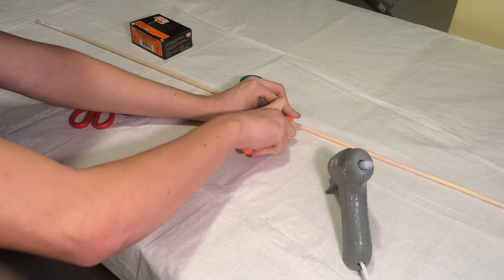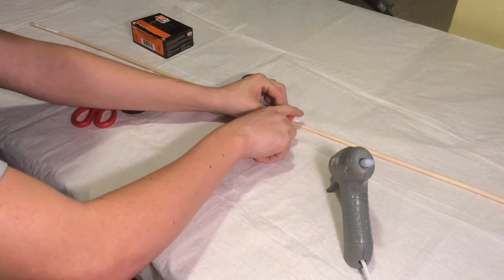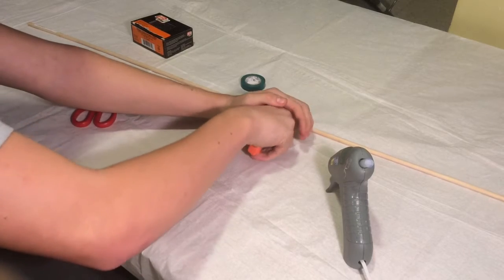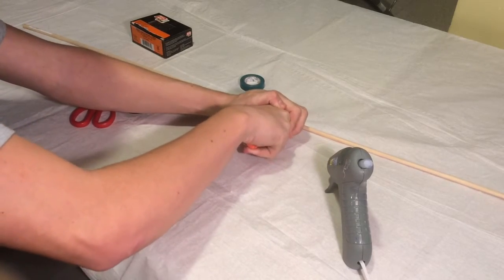So the first thing you're going to do is just cut the wood pole at about two and a half feet. You can do it any way you want. I just tried to do it with a utility knife and then I ended up using scissors.